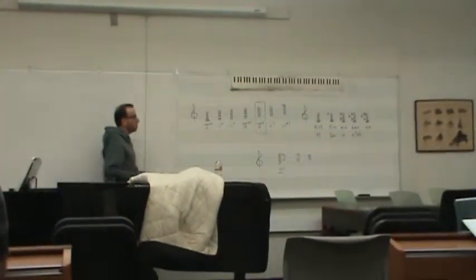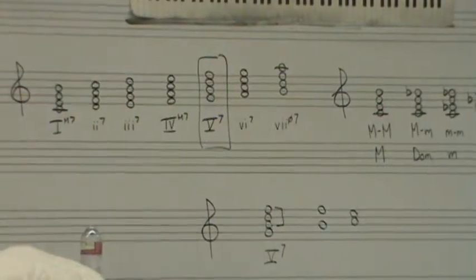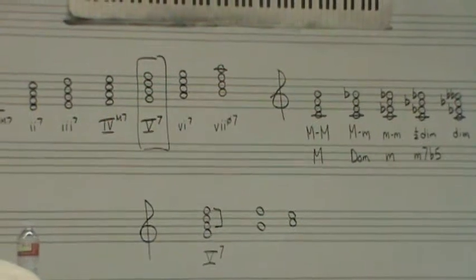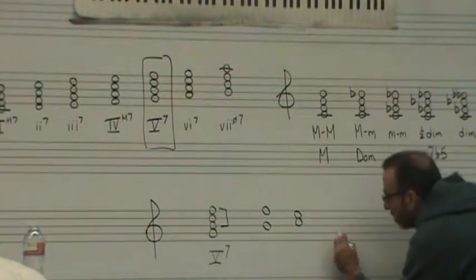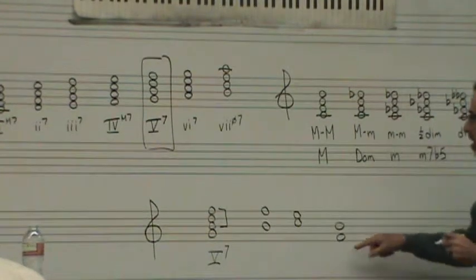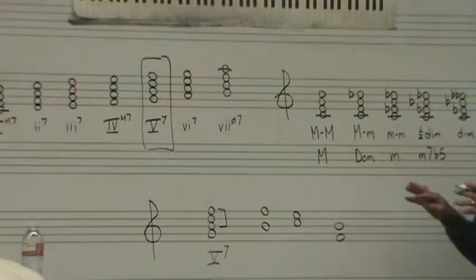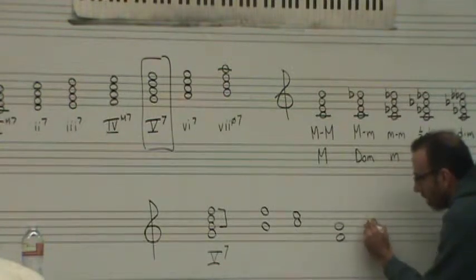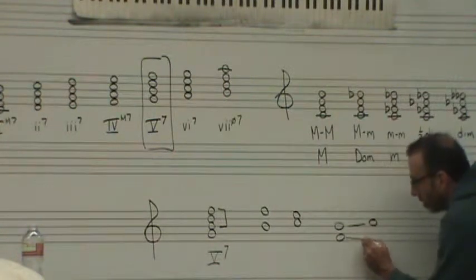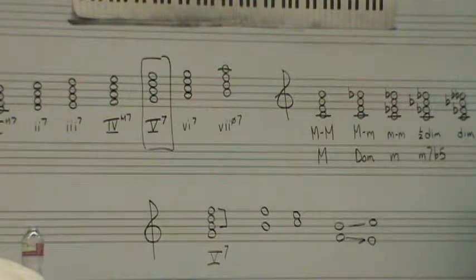And actually, when the tritone is inverted, so let's say we take that same tritone and invert the interval, so put that F down on the bottom, those tendency tones still have the tendency to resolve as we normally would. So Ti will still go up to Do, and Fa will still go down to Mi.